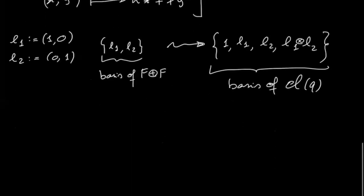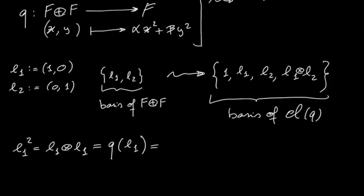So the Clifford algebra will be four-dimensional in this case, as all quaternion algebras, so we just need to check the multiplication between these generators. So e1 squared is equal to e1 tensor e1, so we know by the relation on the Clifford algebra, this is the evaluation of quadratic form at e1, and if you go to this specific quadratic form and evaluate at e1, you get alpha.